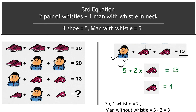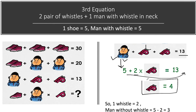Solving this equation: we know the value of a single man wearing a whistle is 5. Moving that to the right side, it becomes negative. So 13 minus 5 equals 8, and we divide by 2 to get 2 whistles equals 4.